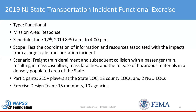In 2019, our annual state exercise scenario was a transportation incident — a functional exercise held on June 12th. What we wanted to do was test the ability to coordinate information and the need for resources associated with the impacts of a train derailment in a densely populated area of the state. We had a freight train collide with a passenger train resulting in mass casualty, mass fatality, and release of hazardous materials. It was a pretty big exercise. Twelve of our 21 counties participated and two additional NGOs. We had a 15-member design team and 10 agencies participating in our exercise planning.